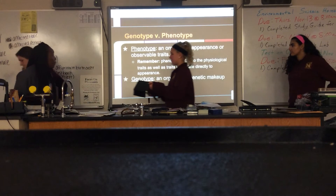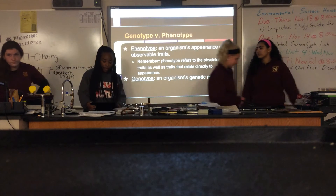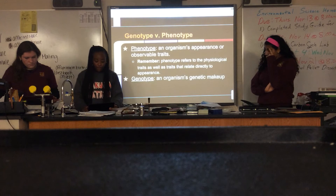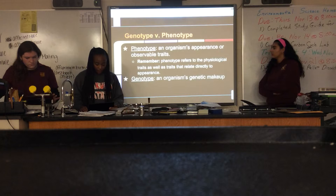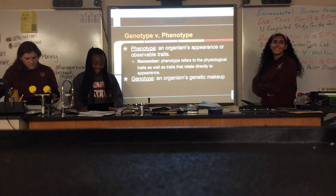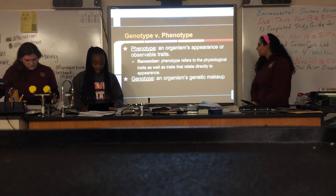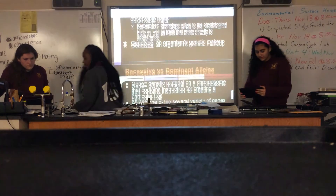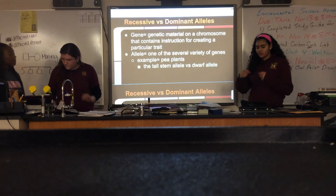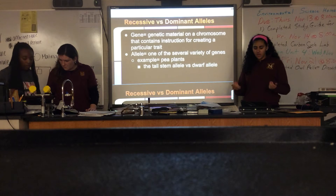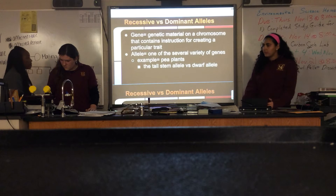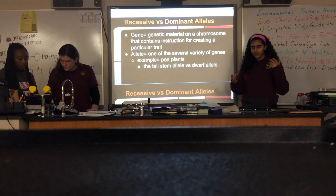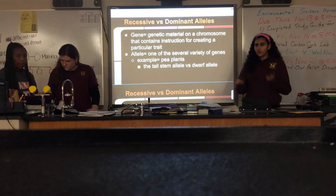Let's look at some vocab: phenotype and genotype. A phenotype is an organism's appearance or observable traits — it's the traits you can see when you first look at a person, including physiological traits as well as traits related directly to appearance. A genotype is the opposite — it's the genetic makeup, the stuff that we can't see. A gene is basically the genetic material on a certain part of a chromosome that codes for a specific trait. Alleles are just different expressions of these genes. For example, continuing with the pea plant idea, you can have a tall stem allele and a dwarf allele — they both code for the same gene but are expressed in different ways.